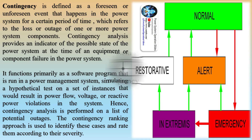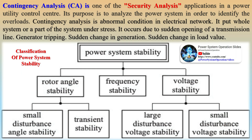Contingency analysis provides an indicator of the possible state of the power system at the time of an equipment or component failure. It functions primarily as a software program that is run in a power management system, simulating a hypothetical test on a set of instances that would result in power flow, voltage, or reactive power violations in the system. Hence, contingency analysis is performed on a list of potential outages.